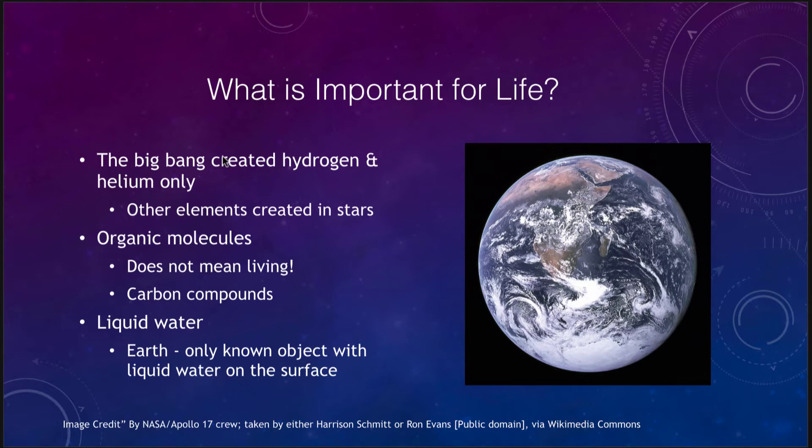What kind of things are important for life? One thing we have to remember is that the Big Bang created only two elements — only hydrogen and helium. Everything else was created in stars. That means that the very earliest planets to form couldn't have looked like the earth because there would have been no heavier elements from which to form them.